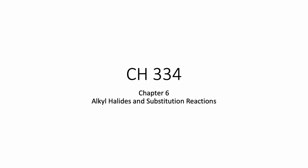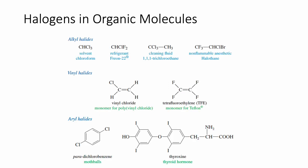Hi everyone, today we will start chapter 6, which is on alkyl halides and substitution reactions. So we just finished our chapter on alkanes a couple chapters ago. Remember an alkane is a molecule that has sp3 hybridized carbons, and the only atoms are carbons and hydrogens. So if we have all single bonds and just carbon and hydrogen, we call that an alkane.